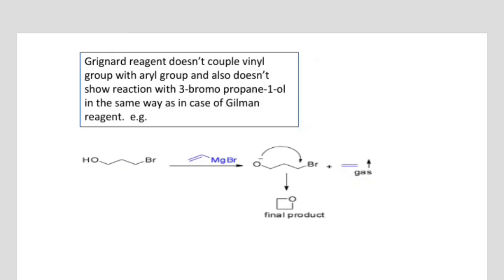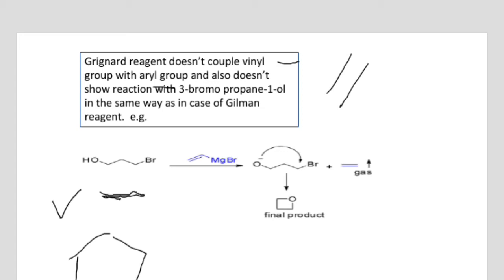Here we will see that the Gilman reagent does not couple with a vinyl group — vinyl group means it has a double bond — and also does not react with an aryl group, which means the presence of a benzene ring. It also does not show a reaction with 3-bromopropan-1-ol, meaning bromine does not leave and the resulting product will not be formed.